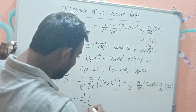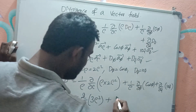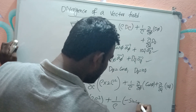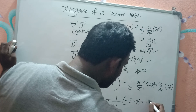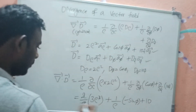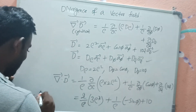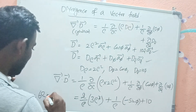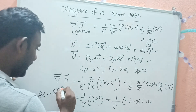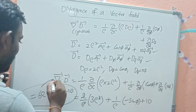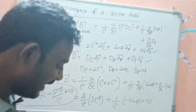Differentiating rho³ with respect to rho gives 3rho². So the first term becomes (1/rho)·6rho² = 6rho. The second term: (1/rho)·∂(cos phi)/∂phi = −sin(phi)/rho. The third term: ∂(10z)/∂z = 10. Therefore, del-bar dot D-bar = 6rho − sin(phi)/rho + 10 in cylindrical coordinate system.